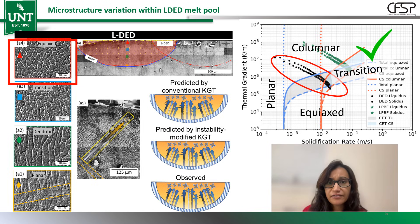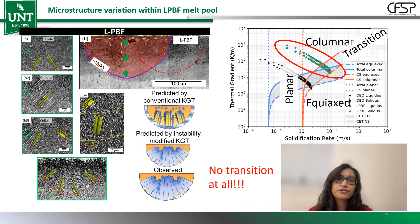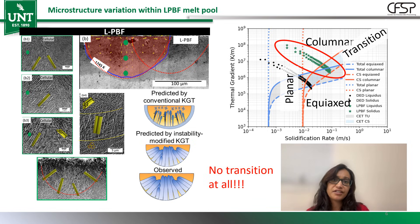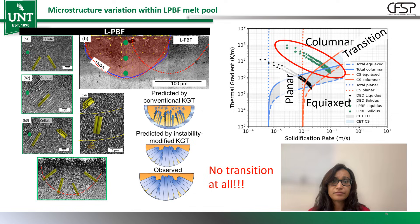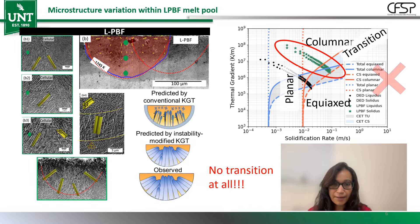But then came LPBF — this is where the real twist of the story begins. Our LPBF printed steel of the exact same alloy showed something entirely different. It showed pure cellular microstructure from the bottom all the way to the top, and zero equiaxed region. When we overlaid LPBF's G and R values on the GR map, the map insisted this top region must become equiaxed. But the microstructure didn't care — it stayed cellular. So at this point we knew something important was missing from the original map.